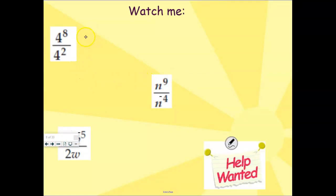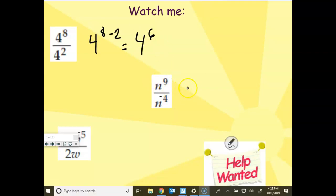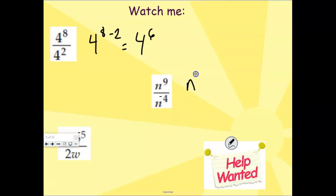Here's some examples. So instead of writing it out like I did before, I'm just going to write 4 to the 8 minus 2, which is 4 to the 6. That's how I'd like you to show your work for me, please. Next problem. This would be N to the 9th minus negative 4. What do we know about minus minus? It turns into a plus. So this becomes N to the 9 plus 4, which is N to the 13th power.